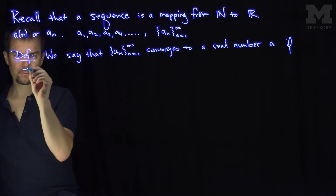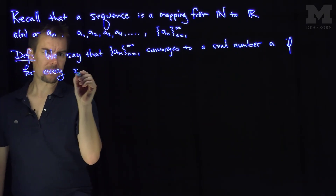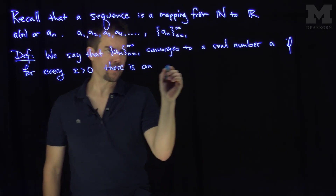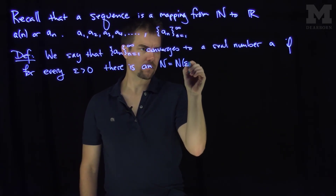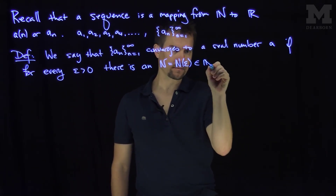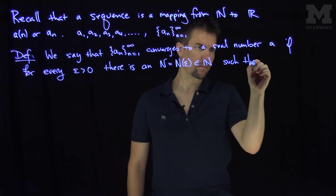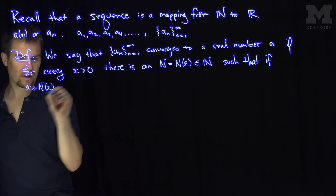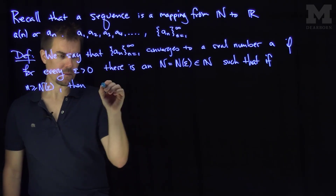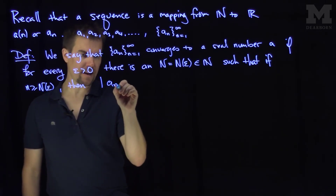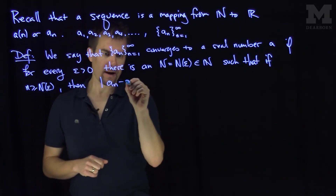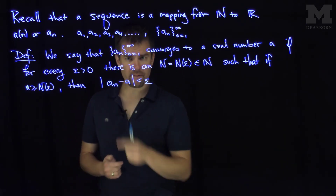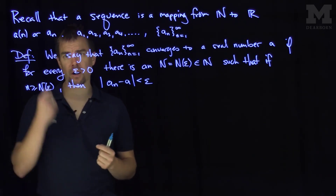if for every epsilon greater than zero, there is an N — which is a function of epsilon and is a natural number — such that if little n is bigger than or equal to N(epsilon), then the absolute value of a_n minus a is less than epsilon. So a_n is within epsilon units of the value a, provided that little n is any natural number larger than the prescribed N(epsilon).